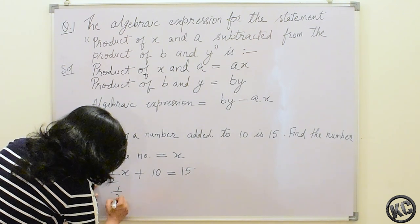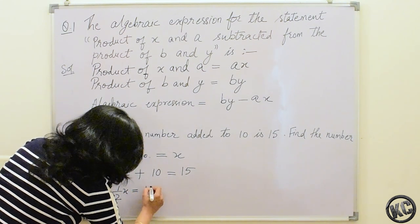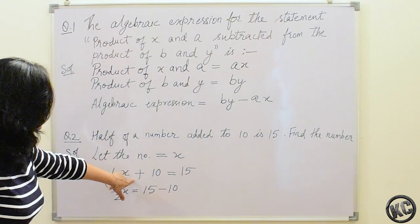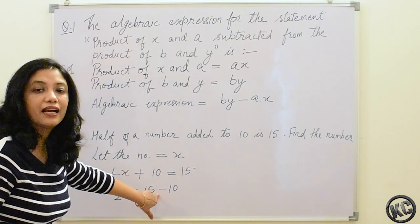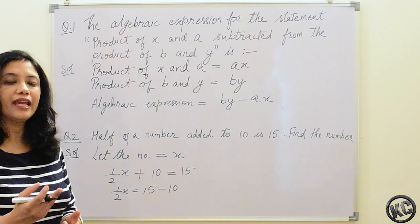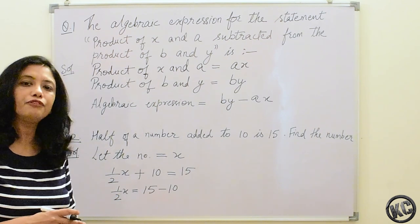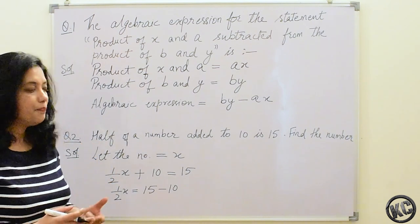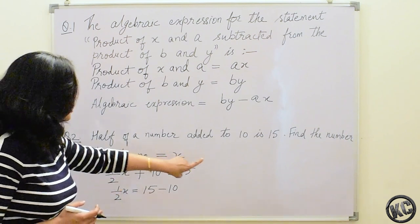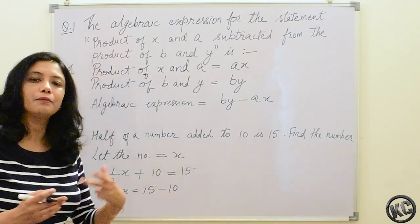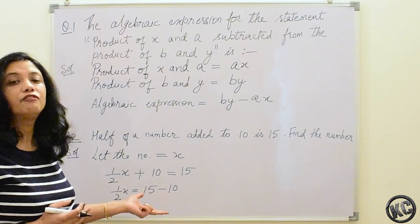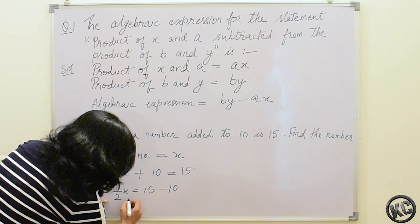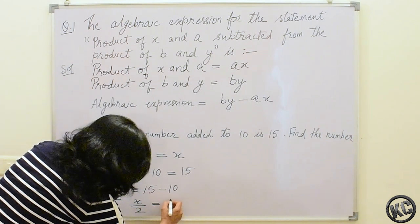This is half of x, so x over 2 equals 15 minus 10. Here 10 is in addition; when we take it to the other side of the equals sign it becomes subtraction. We must remember: whenever we shift a number from one side of the equals sign to the other, the sign changes — if it is addition it becomes subtraction, if it is multiplication it becomes division or vice versa. So x by 2 is equal to 5.